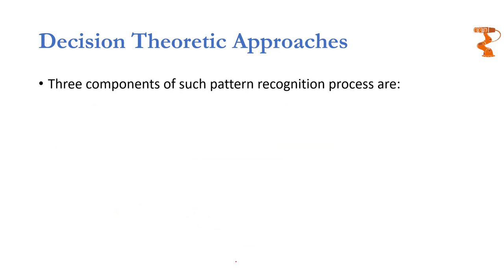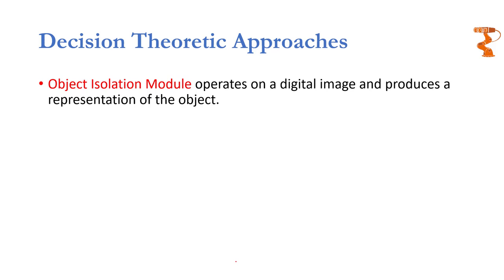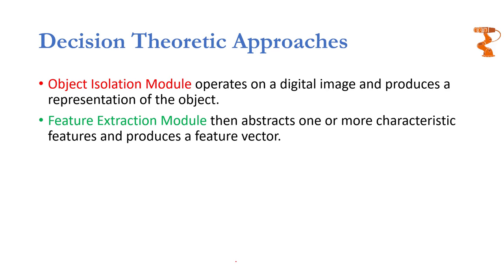To formally state it, the three components of the pattern recognition process are: an object isolation module, a feature extraction module, and a classification module. The object isolation module operates on the digital image and produces a representation of the object that can be used in the feature extraction module. The feature extraction module then abstracts the whole image and converts it into some numbers, i.e., a feature vector.